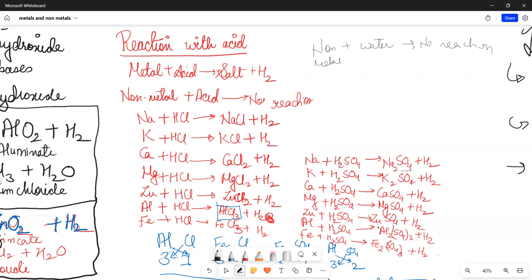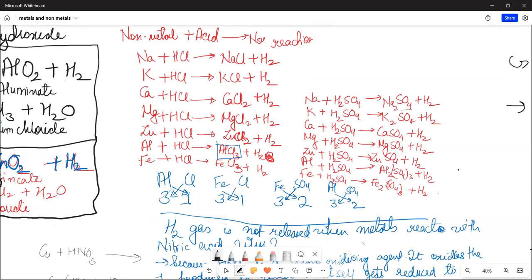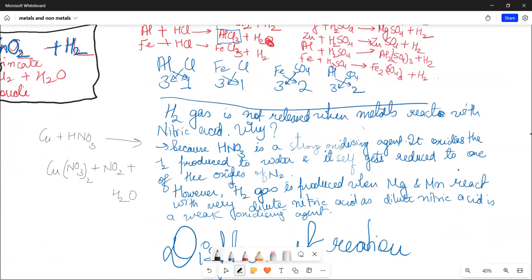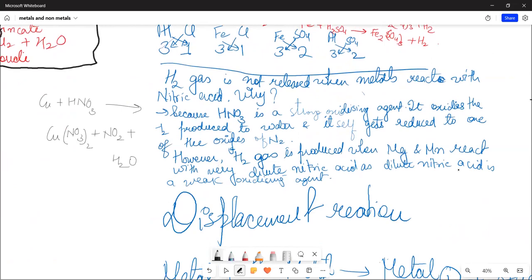Here a question comes: when metals react with nitric acid, hydrogen gas is not released. Why? We have that nitric acid is a strong oxidizing agent. So hydrogen is produced, but it oxidizes - meaning oxygen is added and it converts into water and reduces to one of the oxides of nitrogen.